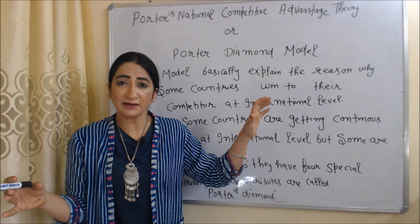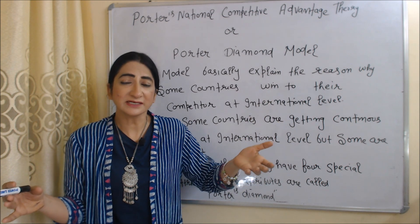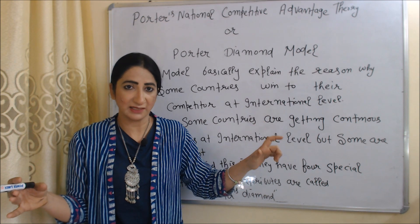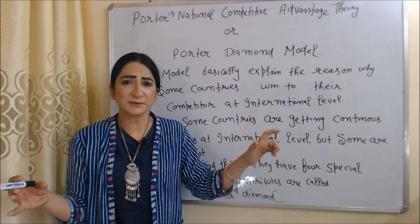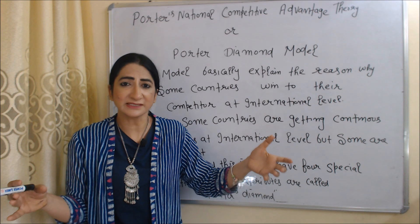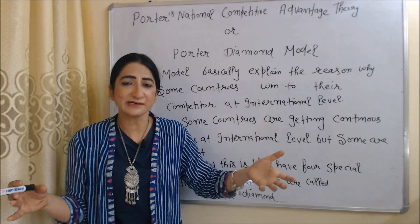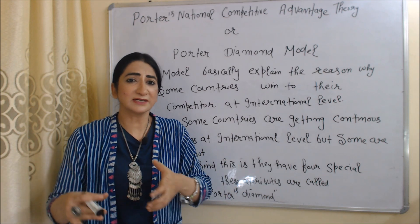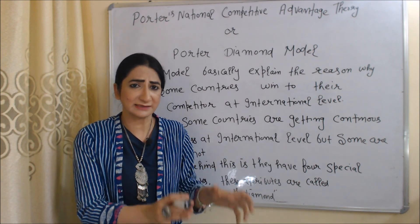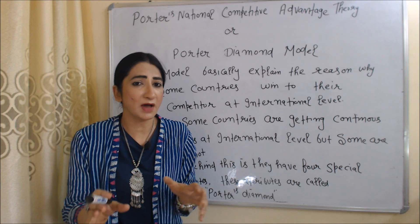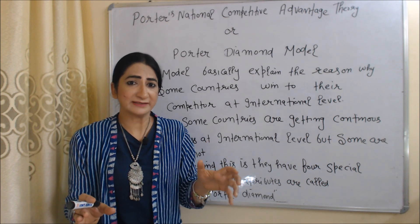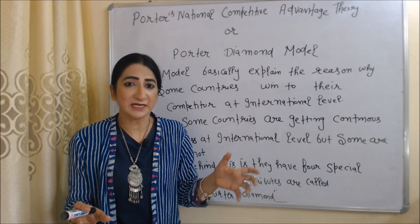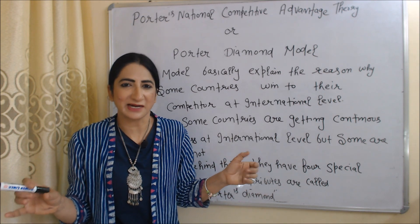Today we are going to talk about Porter's National Competitive Advantage Theory, or we can say the Porter's Diamond Model. This model basically explains the reason why some countries win over their competitors at the international level but some are not. The secret behind this is that they have four special attributes called Porter's Diamond.